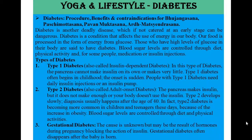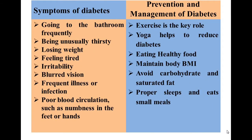Type 3: Gestational diabetes. The cause is unknown but may be the result of hormones during pregnancy blocking the action of insulin. Gestational diabetes often disappears after the baby is born. Symptoms of diabetes include: going to the bathroom frequently, being unusually thirsty, losing weight, feeling tired, irritability, blurred vision, frequent illness or infection, and poor blood circulation such as numbness in the feet or hands.